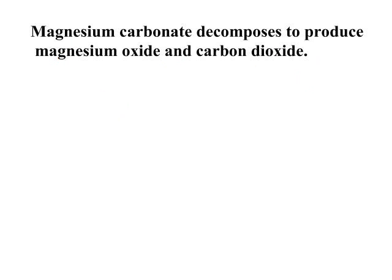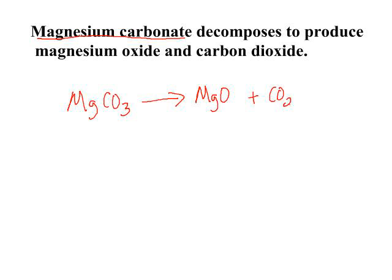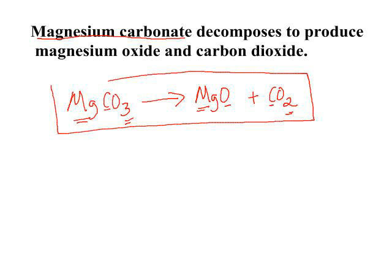Don't forget — when you have word equations, it's very important that you write the correct formulas. Magnesium carbonate, MgCO3, decomposes to produce magnesium oxide and carbon dioxide. Once I know I have the formulas correct: one magnesium, one carbon and one carbon, three oxygens and three oxygens — it balances nicely. If my formulas were incorrect, I would have a very difficult time balancing. Anytime you have difficulty, go back and check that you've written your formulas correctly.